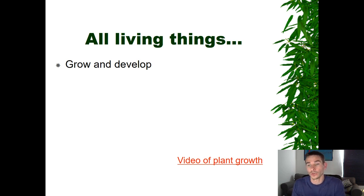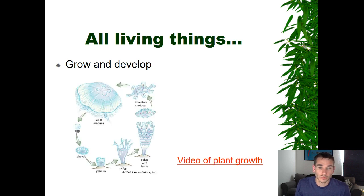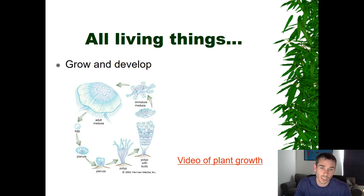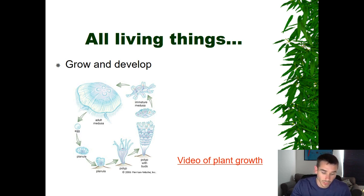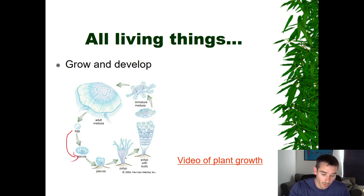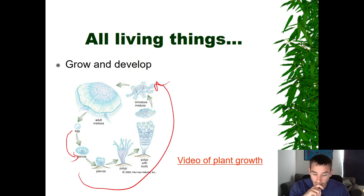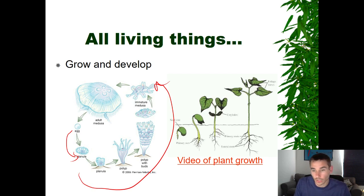Here's a picture of the growth and development of an organism — not related to humans, but you can see there's a growth and development cycle. This organism starts as an egg, then goes through various phases: from egg to a planula, continuing to develop and cycle through stages. It changes as it lives. Plants grow and develop in a very similar way.